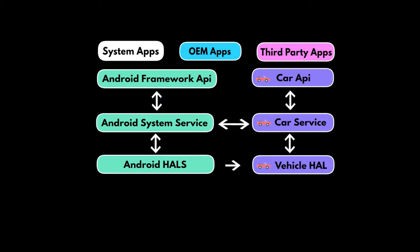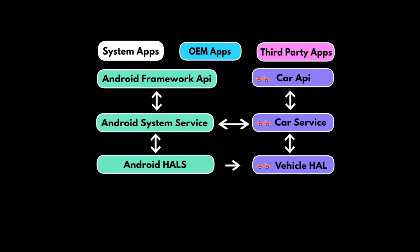As displayed in this diagram, at the top of the stack there are the system apps, OEM apps, and third-party apps. The app communicates with the services through the Android framework API in the case of standard Android. In the case of automotive apps, the car API is used to communicate with the car service.